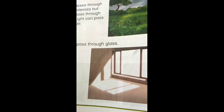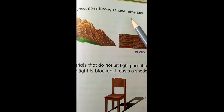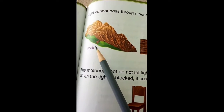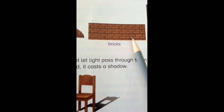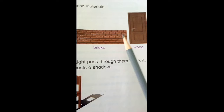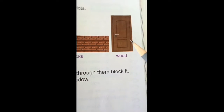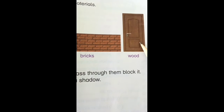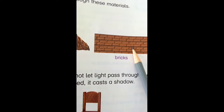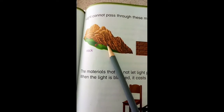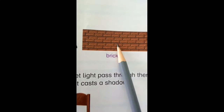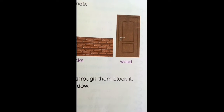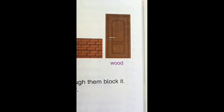Light cannot pass through these materials. The examples through which light cannot pass are: rock — pathar, pahad, mountains; bricks — bricks ki wall mein se bhi light pass nahi hoti; and wood — lakdi ka darwaza, koi bhi wooden cheez, us mein se bhi light pass nahi hoti. So rocks, bricks, walls and wooden objects block light.